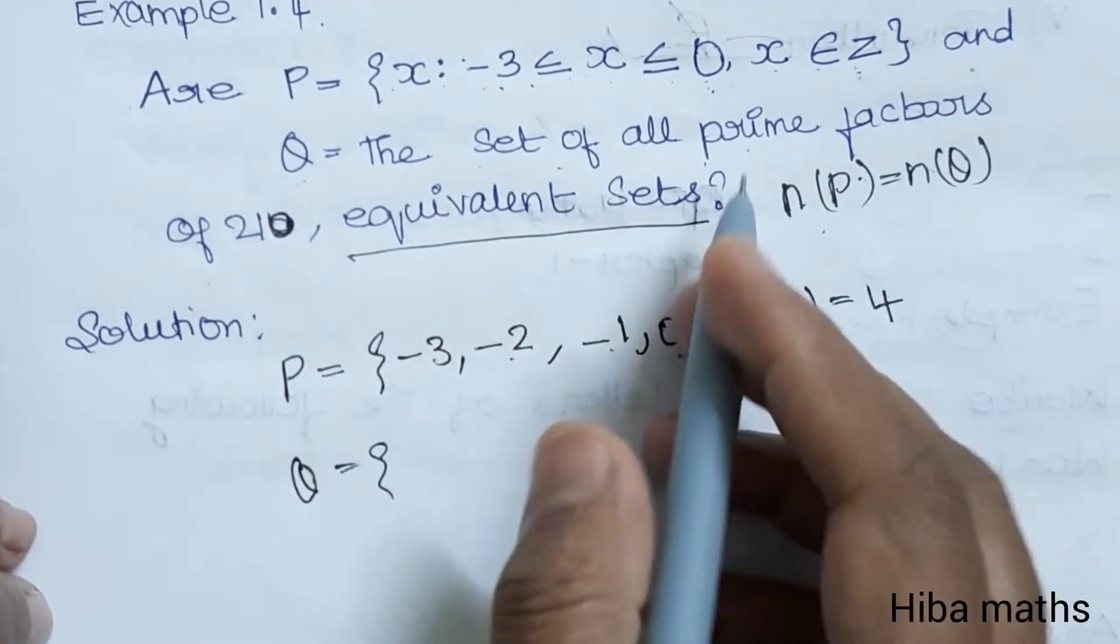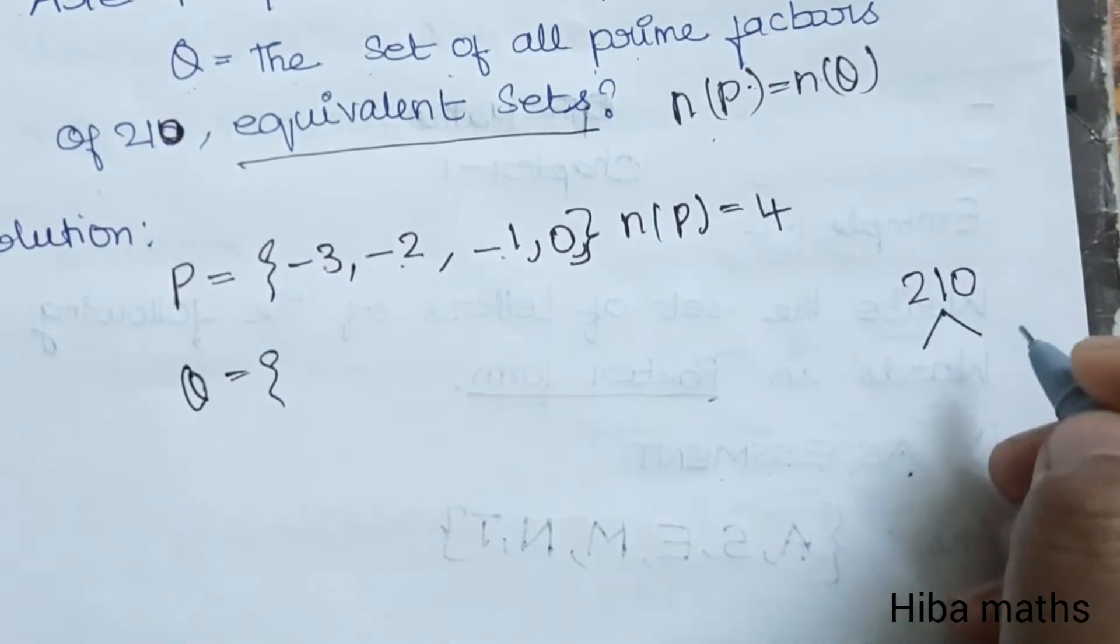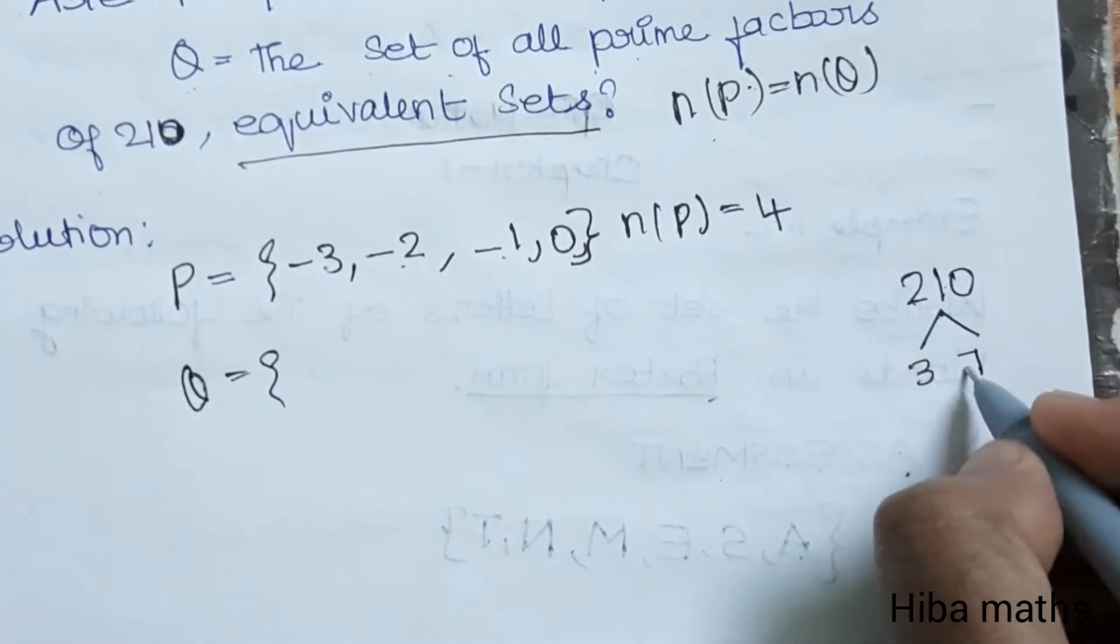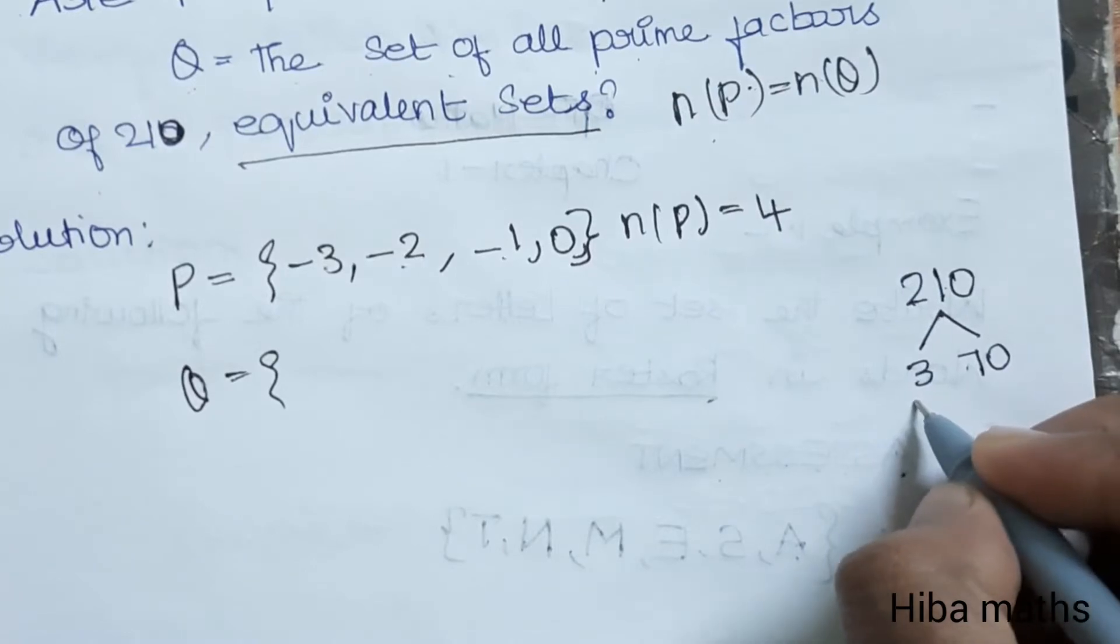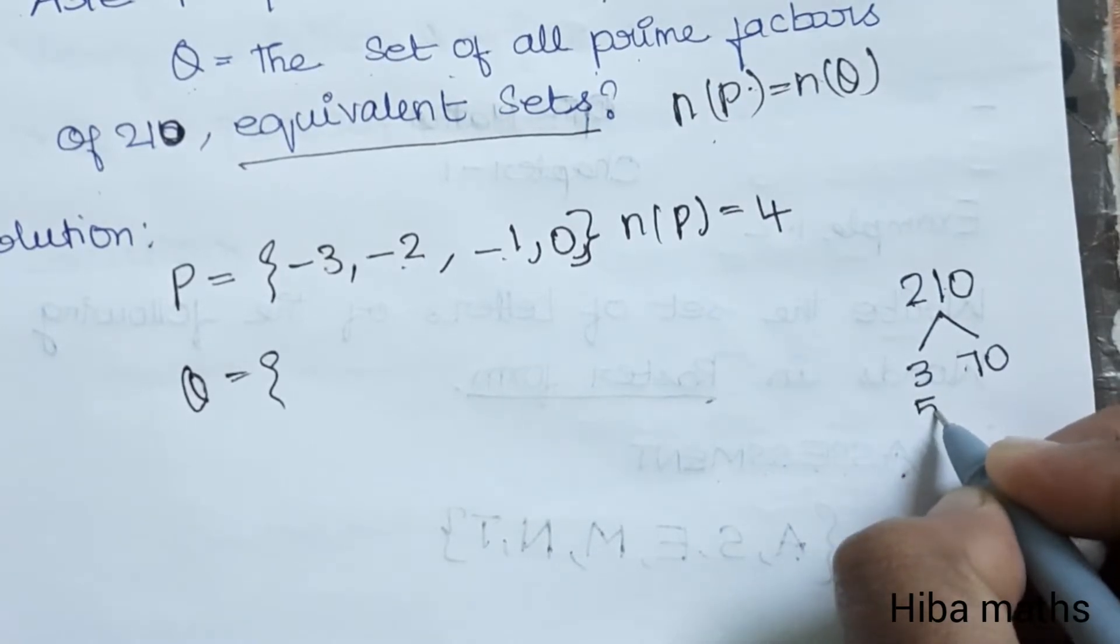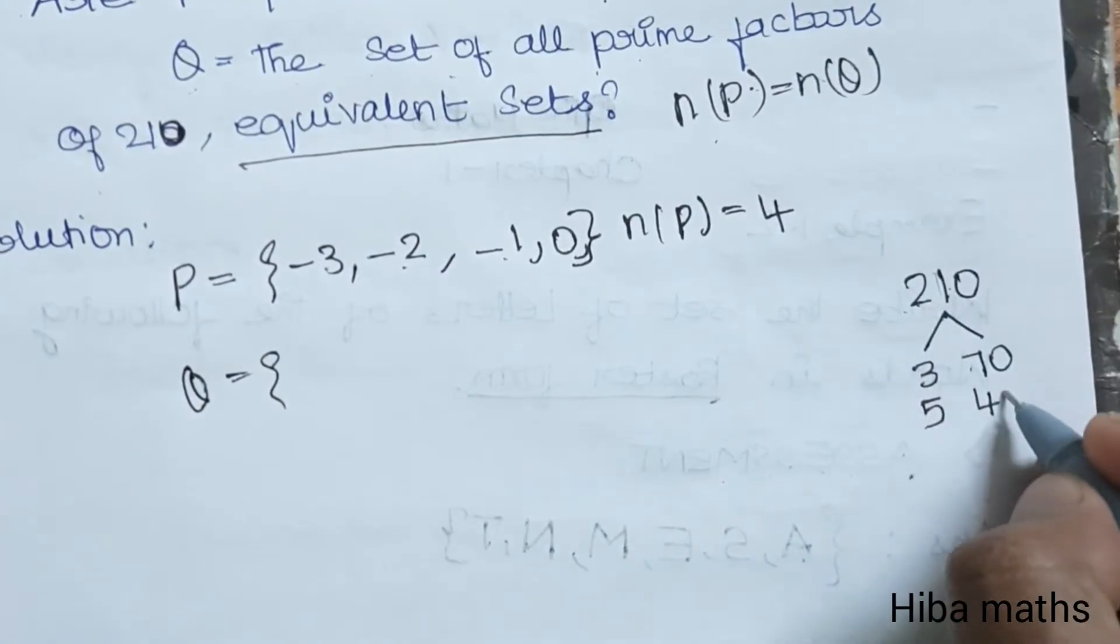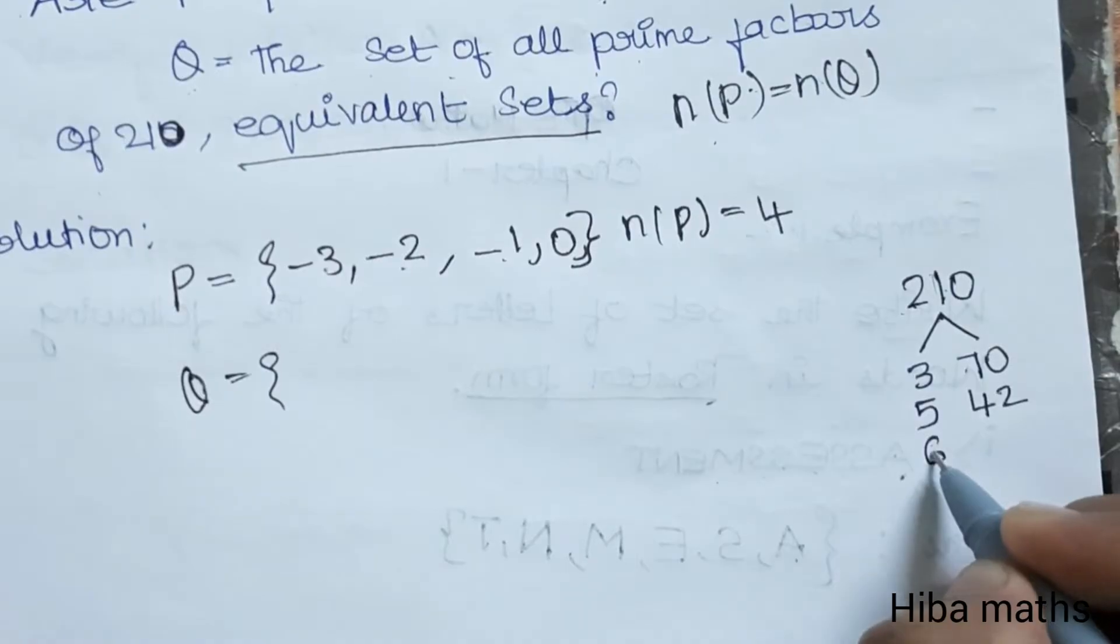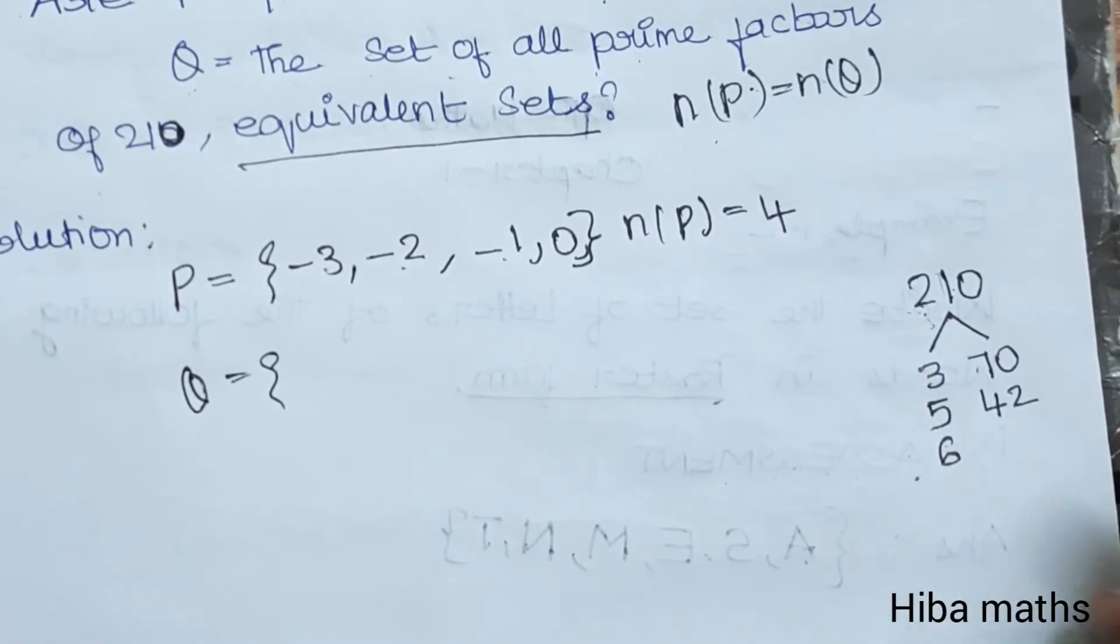Q is equal to prime factors of 210. So 210: 3 table has 3×7=21, 5 table has 5×4=20 balance 10, 5×2=10. Next 6 table is 6×3=18, 19, 20, 21.